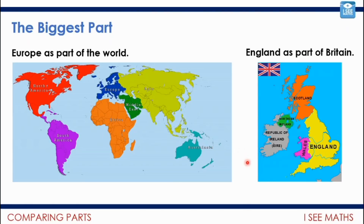Another example: Europe as a part of the world is a relatively small fraction, whereas England as a part of Britain is a relatively large fraction. Of course Europe is physically bigger than England, but Europe compared to the whole world is a smaller fraction than England is as a part of Britain.